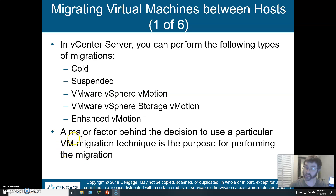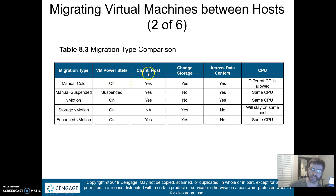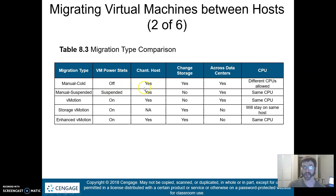There's a handy comparison chart which expresses a lot of these concepts. With a manual cold migration, the power state is off, and you can change the host, change the storage, move it between data centers, and move it between different CPUs.